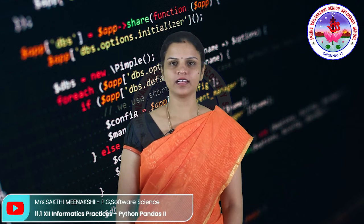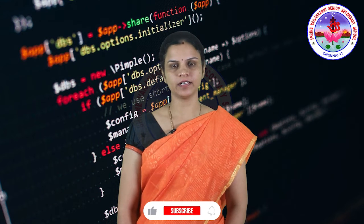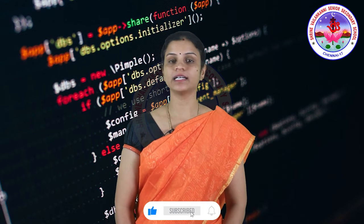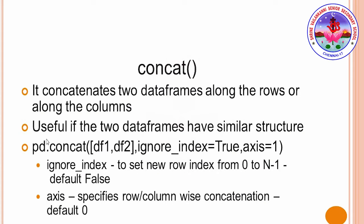Hello students, good day. Today we are going to continue with combining DataFrames. In the previous video we learned about the append method, so in this video we are going to learn the concat method. The function concatenates two DataFrames along the rows or along the columns. In the previous append method we could only combine DataFrames by rows, but here we also have the option to combine column-wise.